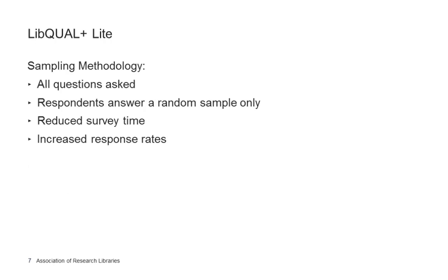In 2010, the Association of Research Libraries introduced the shortened version of the survey, LibQual Lite. With LibQual Lite, all of the questions on the survey are asked over the course of your survey run, but each respondent answers only a random sample. This methodology reduces the time it takes for participants to complete the survey and has been shown to increase response rates. LibQual Lite is a customization option you can decide on after you register for a survey, and you can choose what percentage of your participants will receive the Lite questionnaire.